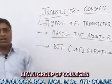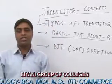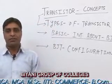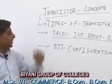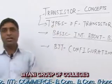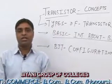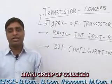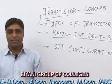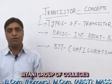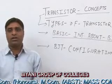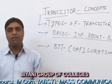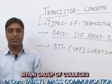Transistor is the main electronics device. As we know, there are two types of transistors: the first is BJT and the second is FET. BJT stands for Bipolar Junction Transistor and FET is Field Effect Transistor.